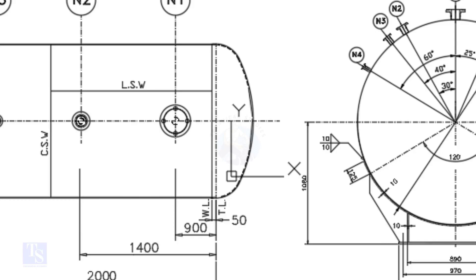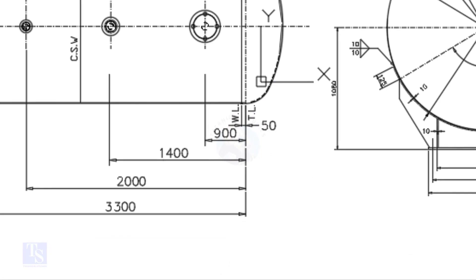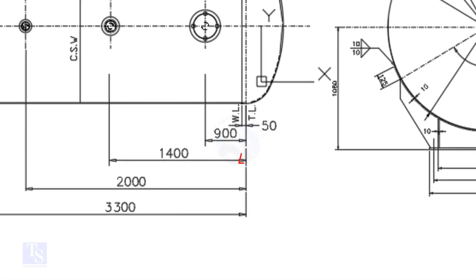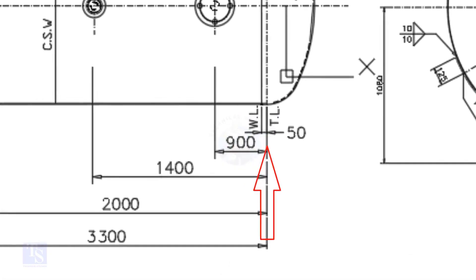In this drawing, the nozzle center distance is starting from the TL. In some drawings, you may see the nozzle center is given from the WL. So, before starting the marking, carefully see these things.